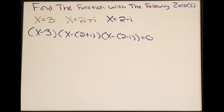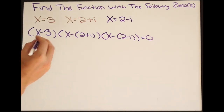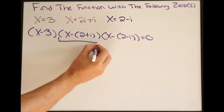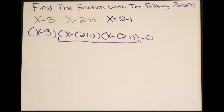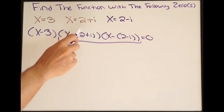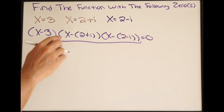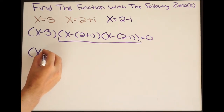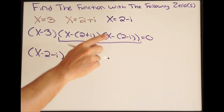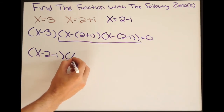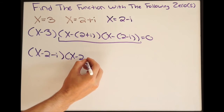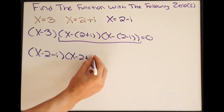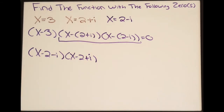We're working in reverse — we want to find the function, so we're going to expand it out. I'm going to work on the two complex factors first. We need to distribute the negative inside the parentheses, giving us (x minus 2 minus i) times (x minus 2 plus i).